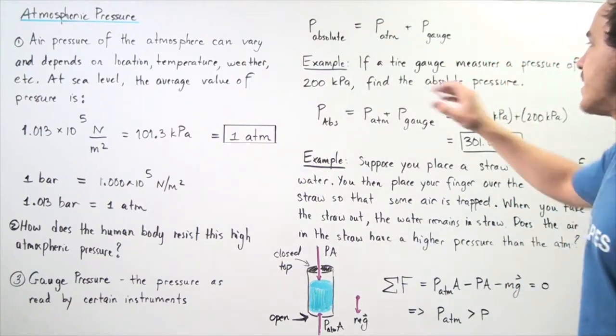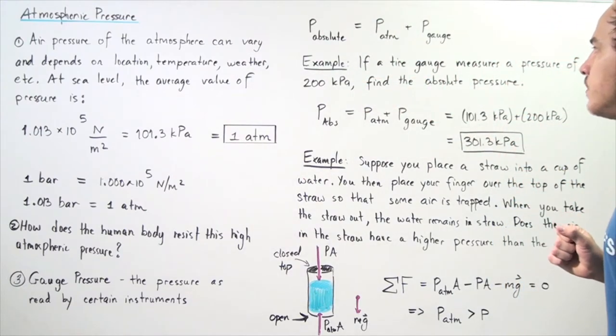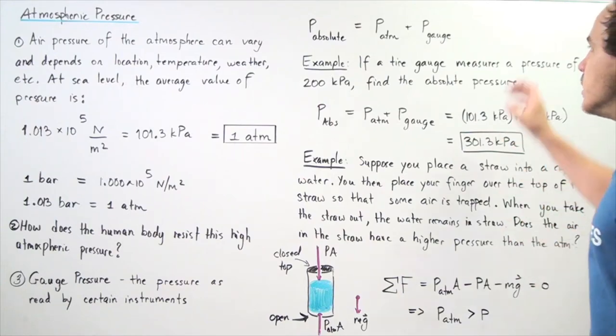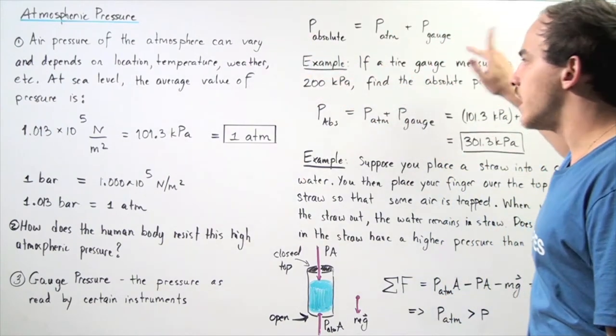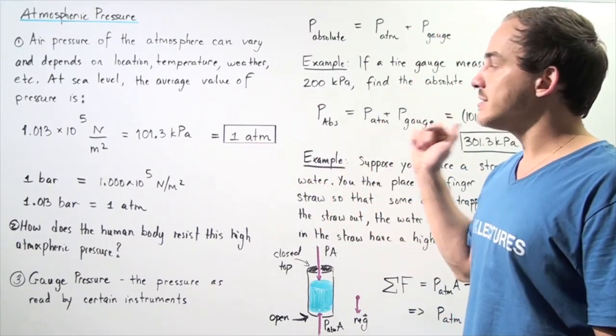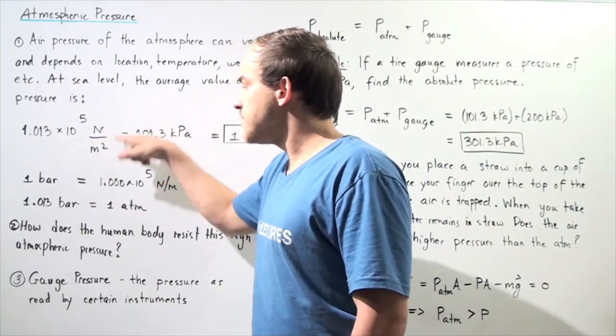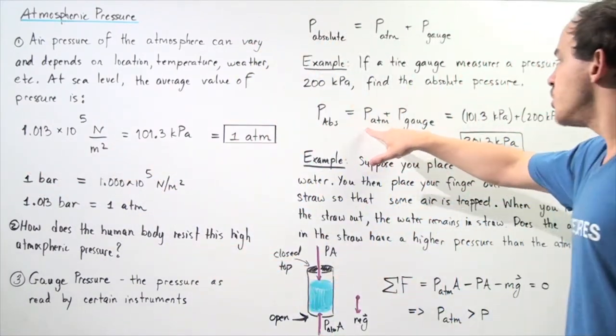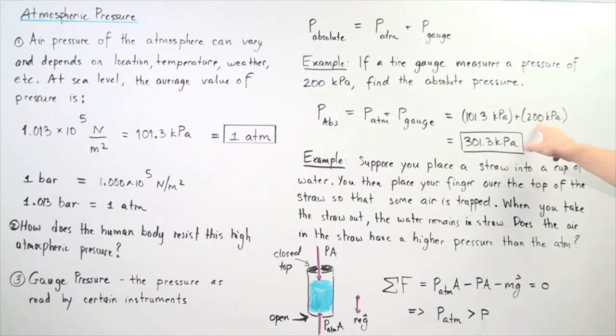To look at an application of this equation, let's look at the following example. If a tire gauge measures a pressure of 200 kilopascals, find the absolute pressure in kilopascals. We simply use this formula and recall that at sea level, our atmospheric pressure is 101.3 kilopascals. So, 101.3 kilopascals plus 200 kilopascals gives us an absolute pressure of 301.3 kilopascals.